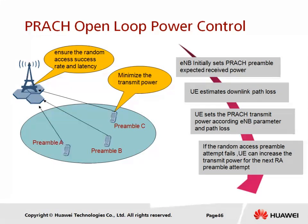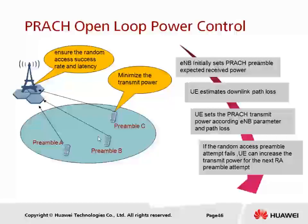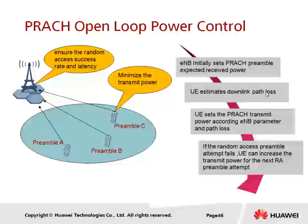Open loop power control simply means there is no feedback from the other party. The eNodeB initially only sets an expected preamble received power, where the UE has to estimate the downlink path loss by calculation, assuming that uplink path loss is exactly the same as downlink path loss. The UE calculates the uplink transmit power according to this expectation and path loss, then sets the initial transmit power and sends the preamble.